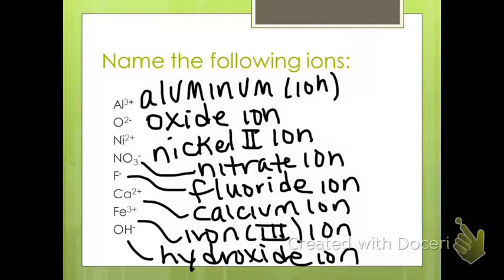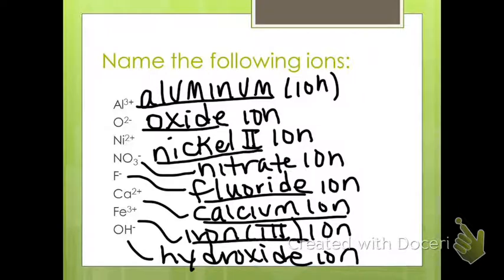Looking through the names, if it's a cation on the front of the periodic table such as aluminum or calcium, you just call the ion by its normal name. If it is an ion from the right-hand side of the periodic table, a non-metal, it's going to have an IDE ending like oxide or fluoride. If it is a transition metal like nickel or iron, the charge is indicated by the Roman numeral. So it's nickel 2 and iron 3. And then of course my polyatomic ions, the nitrate and hydroxide, were on the back of the periodic table.